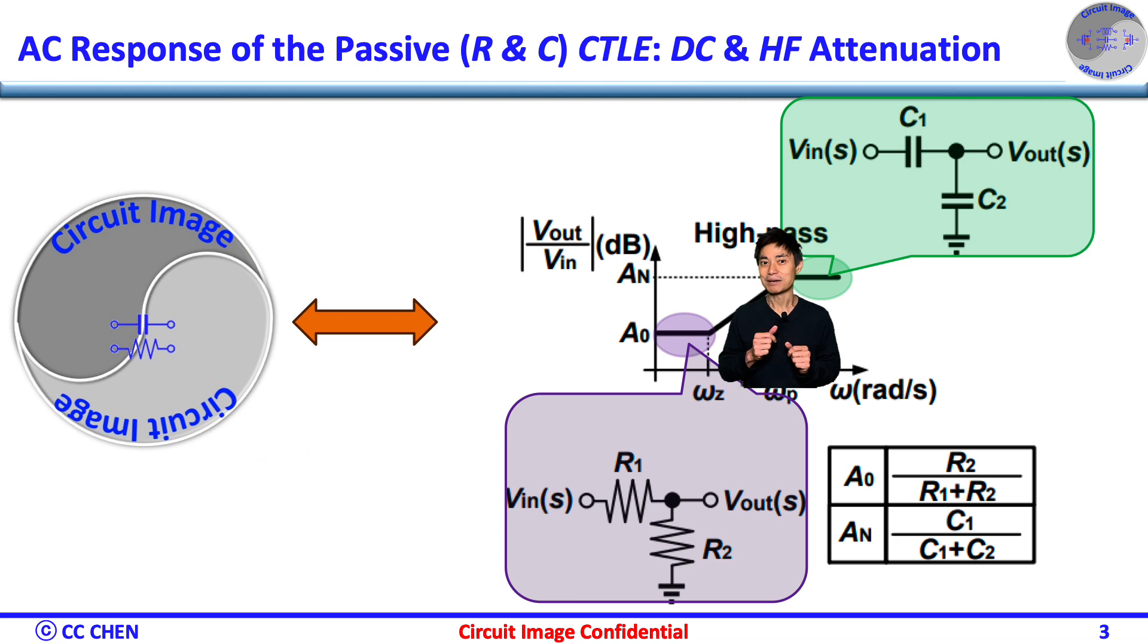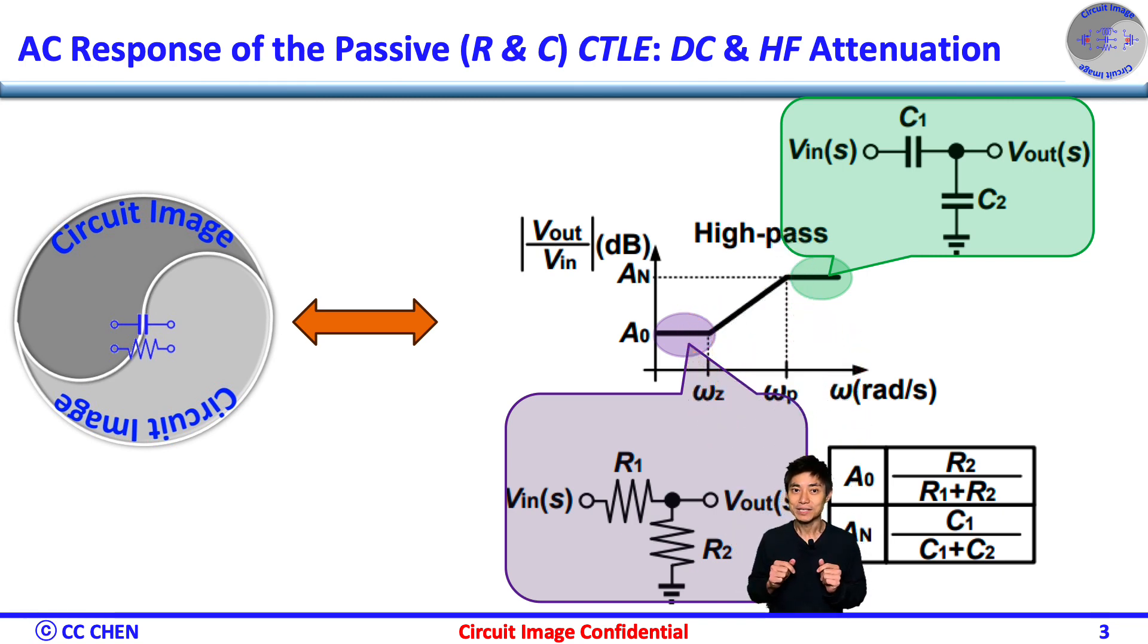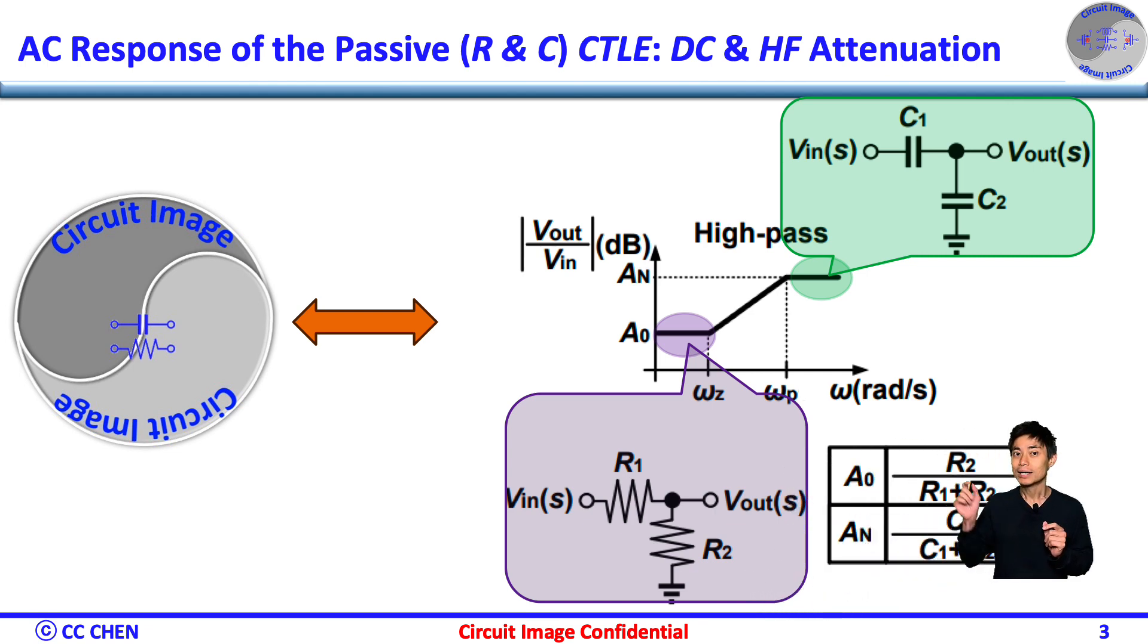Let's go step by step to compose the AC response of the CTLE shown here. First of all, how to get the DC low-frequency attenuation? Right, just a simple resistive divider with the R1 in series with the R2 shown here. Then, the DC attenuation would be R2 divided by R1 plus R2.